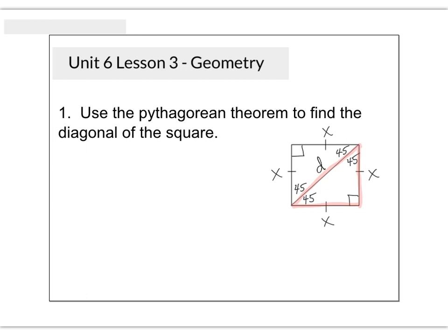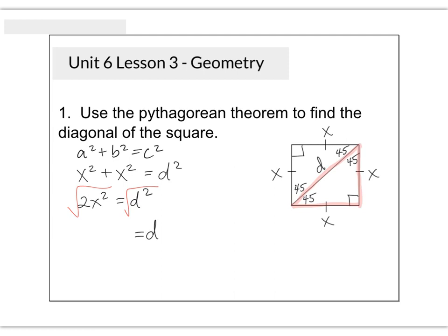Let's call the diagonal D. Our job here is to find the length of that diagonal. If you look at the triangle outlined in red, we have a right triangle and we could do the Pythagorean theorem — a squared plus b squared equals c squared. The legs are x, so we're going to have x squared plus x squared equals diagonal squared. x squared plus x squared is 2x squared. We're trying to find the length of the diagonal, so we want to get d by itself. To undo the square, we take the square root. The square root of d squared is just d — the square root and the square cancel out.